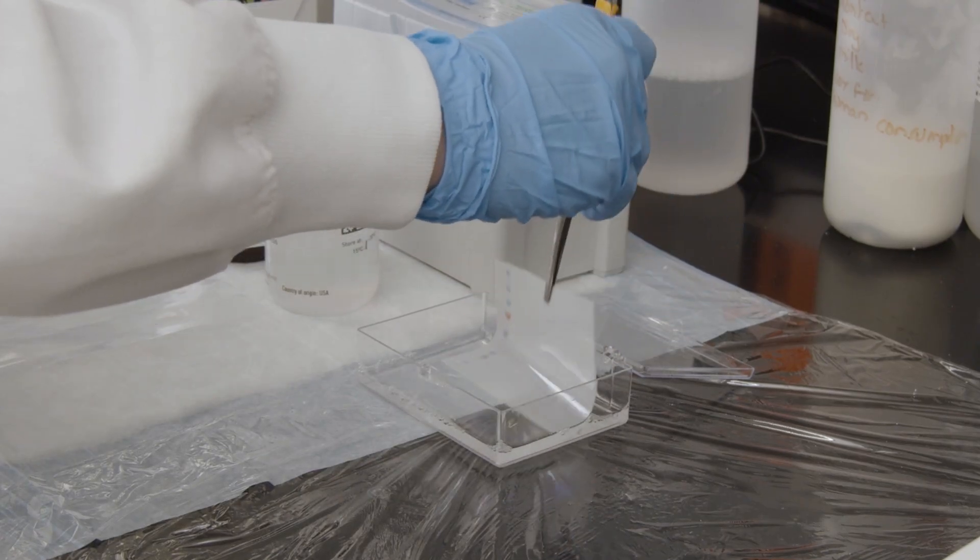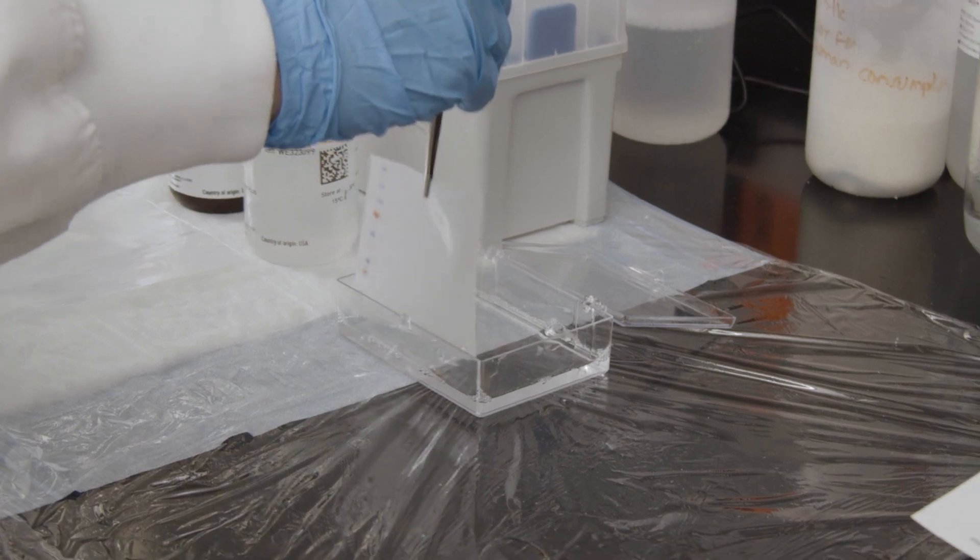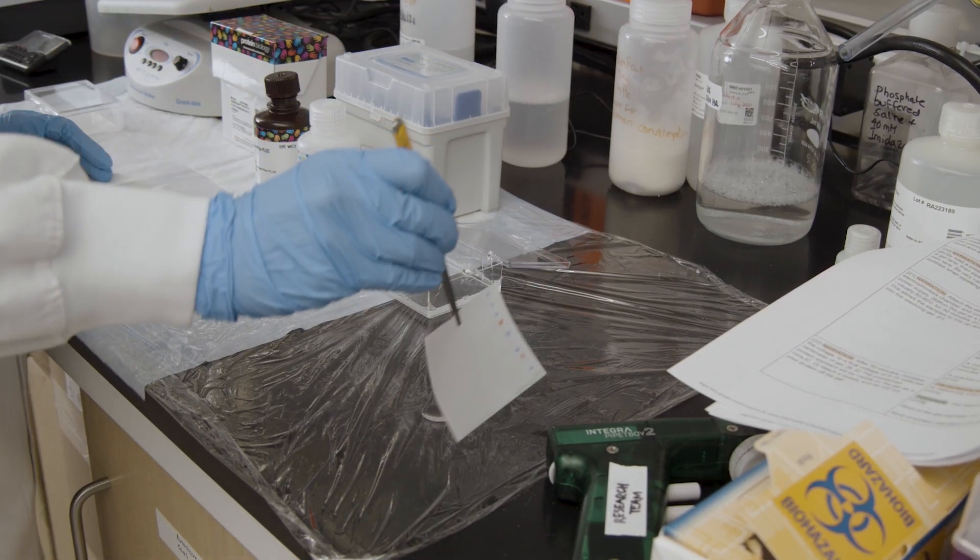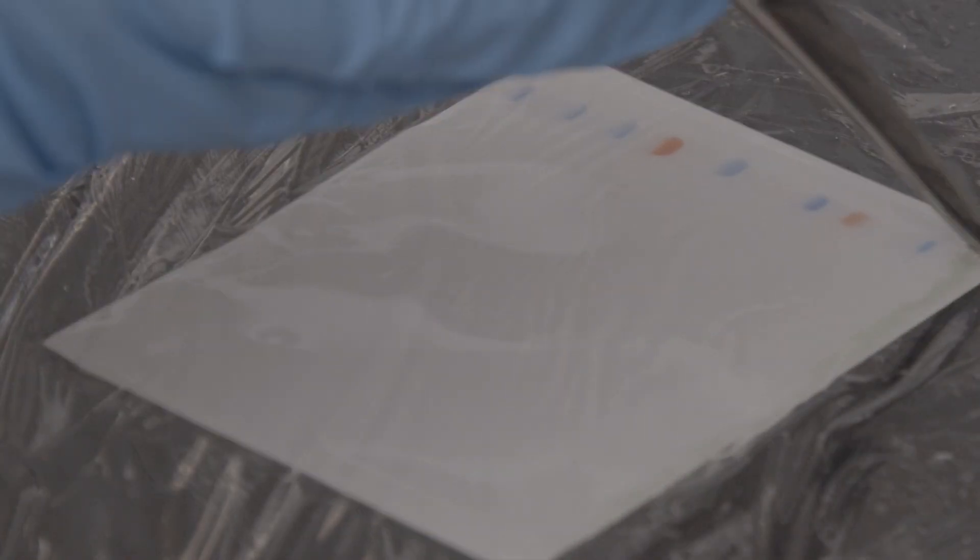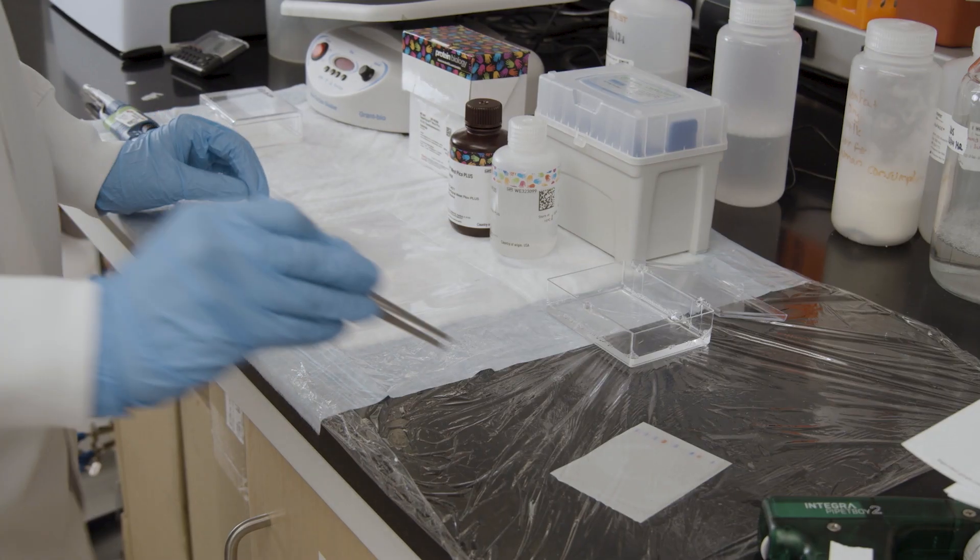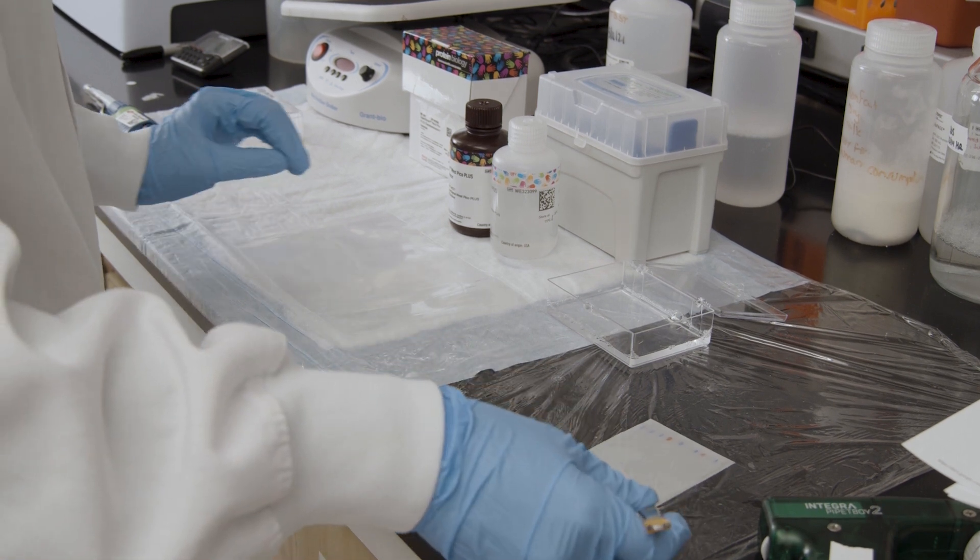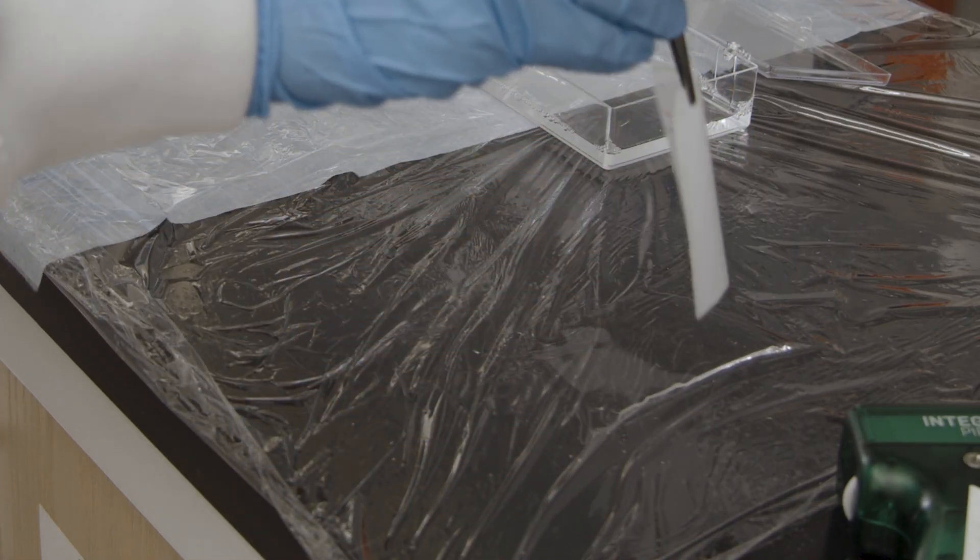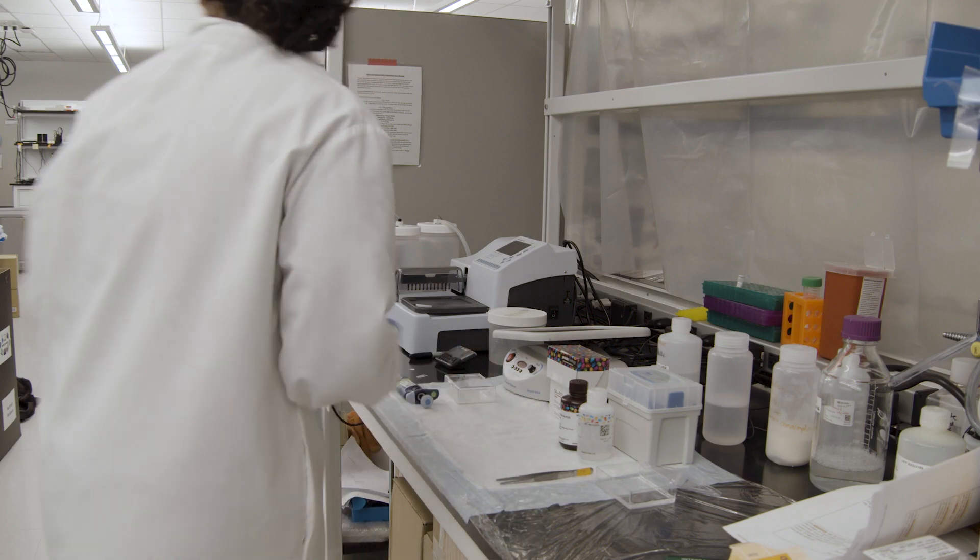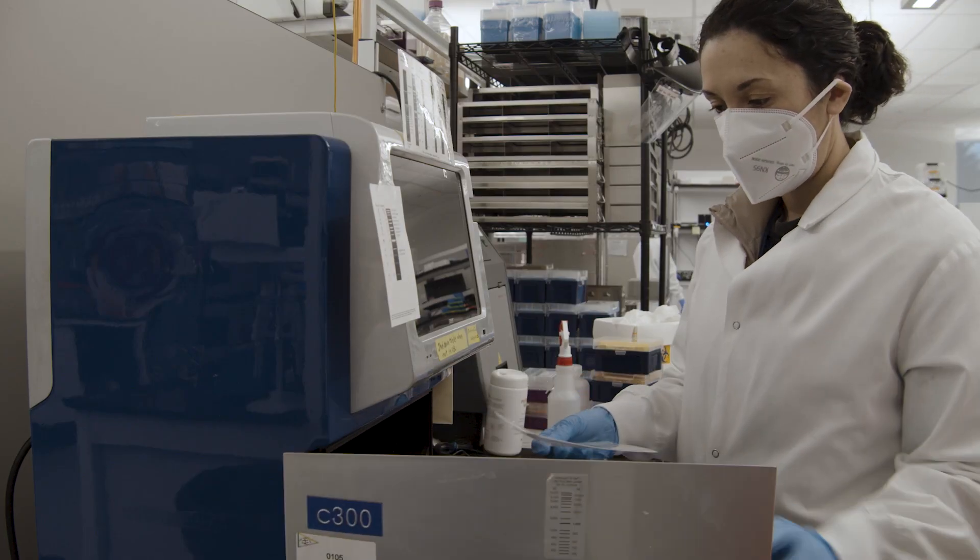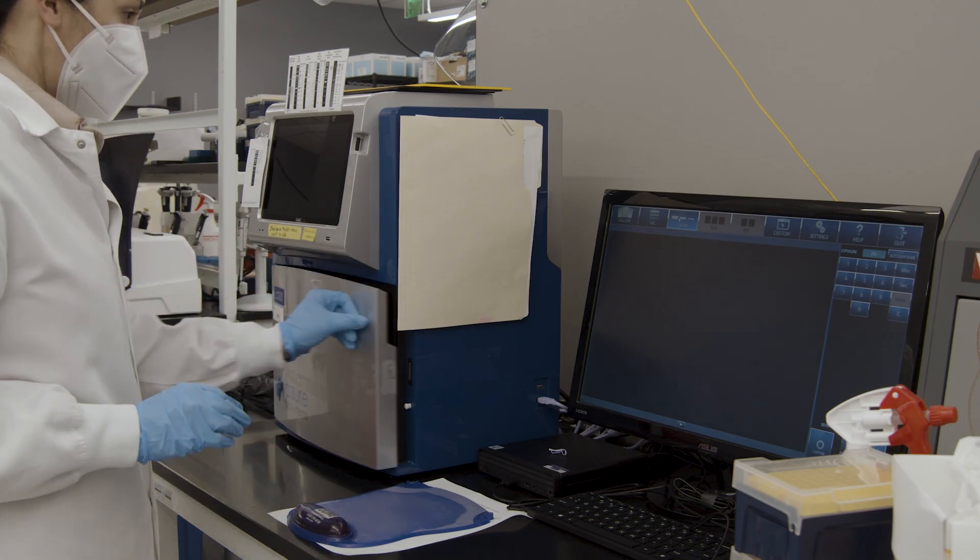Gently remove the excess wash buffer from the membrane by tapping and place the membrane protein side down into the chemiluminescence substrate. Using the forceps, gently tap the excess chemiluminescence reagent off the membrane and place the membrane protein side up in a clear sheet protector.